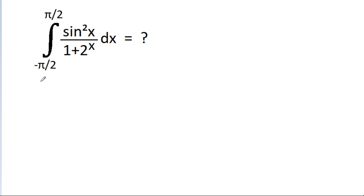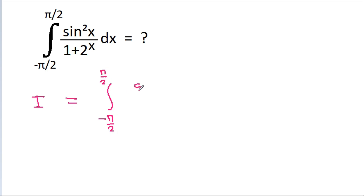In this video, we have to find the integral from minus pi by 2 to pi by 2 of sine square x divided by 1 plus 2 to the power x dx. So if we take i equal to the integral from minus pi by 2 to pi by 2 of sine square x by 1 plus 2 power x dx, suppose this is equation 1.